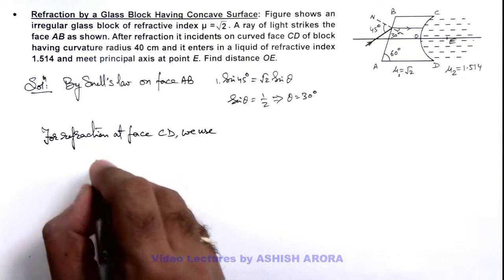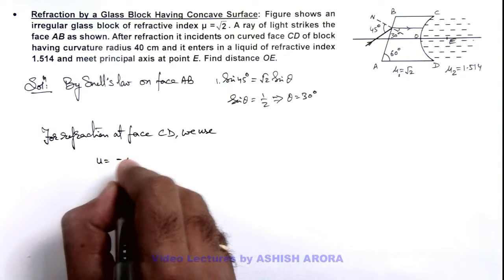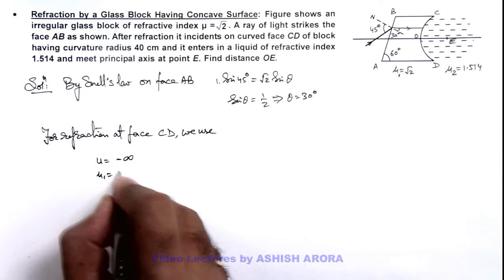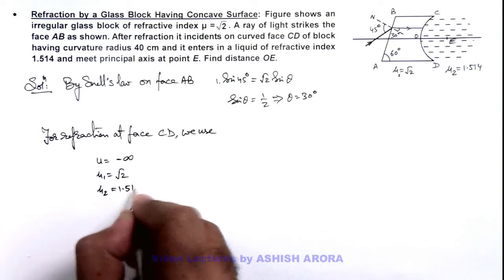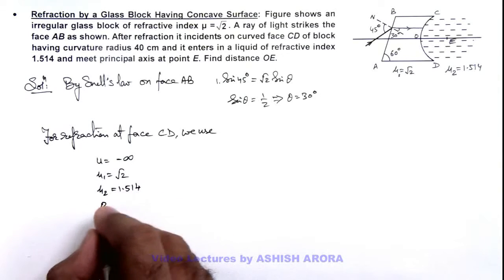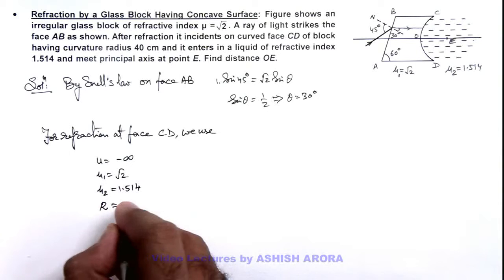Mu 1 we can take as root 2, mu 2 we can take as 1.514, and radius of curvature we'll use as plus 40 centimeters.